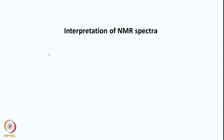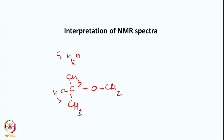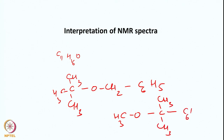Suppose we have a molecule with formula C11H16O. This molecule has two isomers. One isomer is something like (CH3)3C-O-CH2-C6H5, and the other molecule is CH3-O attached to a disubstituted benzene with CH3 groups. If these two are isomers of the same molecule, how can we distinguish based on the NMR spectrum which molecule belongs to what?